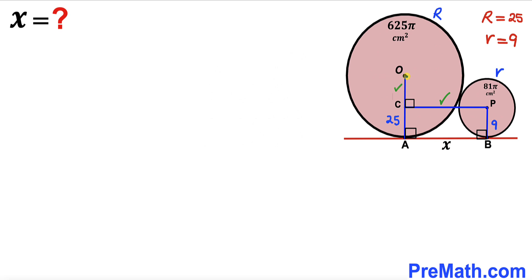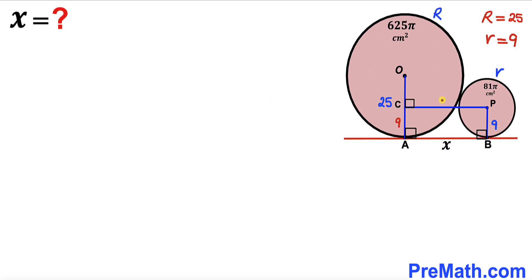I've dropped a perpendicular PC onto radius OA. We can observe that PB equals CA, so CA = 9 cm. Also, PC equals AB, so PC = x. Since OA = 25 and CA = 9, the remaining segment OC = 25 − 9 = 16 cm.